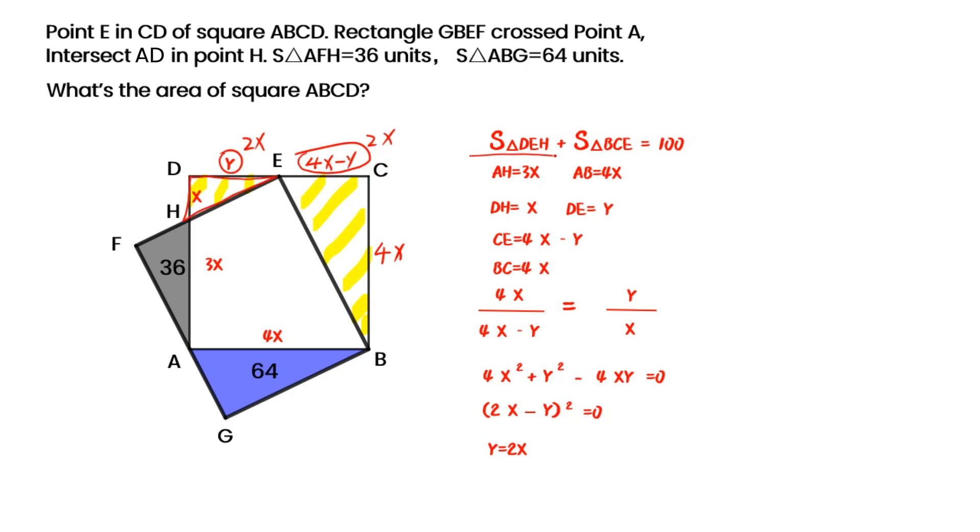The area of triangle DEH is 1 half of DH times DE, and same way for area of triangle BCE. We get equation for X.